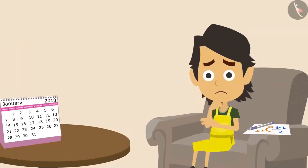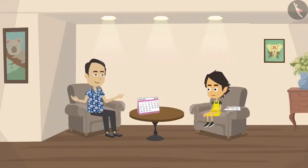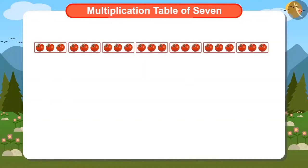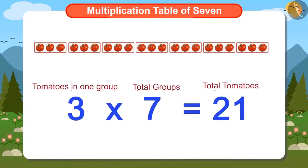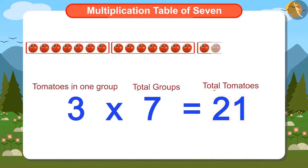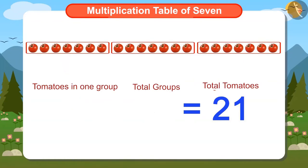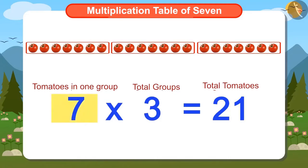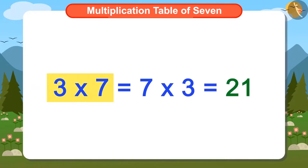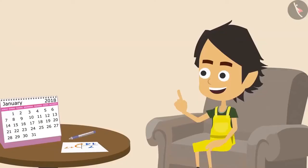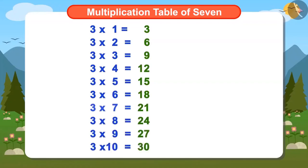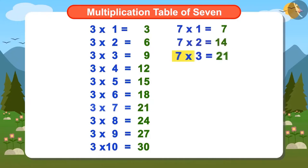Ayushman is even more confused about how this was possible. Papa explained that if he makes 7 groups of 3 tomatoes each, then to find the total number of tomatoes, he can multiply 3 by 7 and find that there are 21 tomatoes. If we put these 21 tomatoes in 3 equal groups, then there will be 7 tomatoes in each group. This means that whether 3 is multiplied by 7 or 7 is multiplied by 3, the answer will be 21.